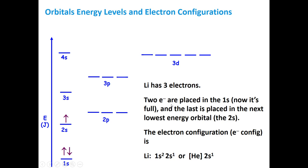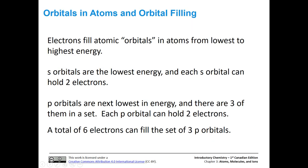Let's talk a little more officially about orbital filling. Electrons fill atomic orbitals from lowest to highest energy. S orbitals at any n are the lowest energy, and each s orbital can hold two electrons. The set of three p orbitals are the next lowest in energy, and that's at any n — so n=1, n=2, and so on. P orbitals are higher in energy than s orbitals.